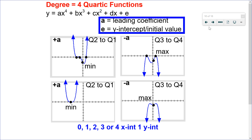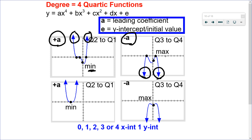Another even degree is a quartic function, degree 4, which behaves very similarly in terms of end behavior to a quadratic. When A is positive, it opens up with a minimum. When A is negative, it opens down with a maximum value. For quartic functions, you're always going to have 1 y-intercept, but you could have 0, 1, 2, 3, or 4 x-intercepts. You can see different examples of each one of those scenarios.